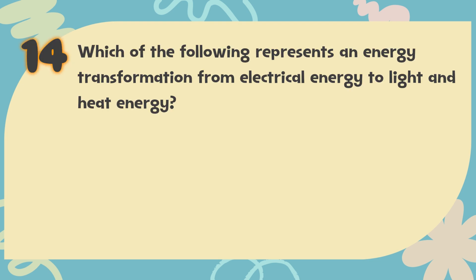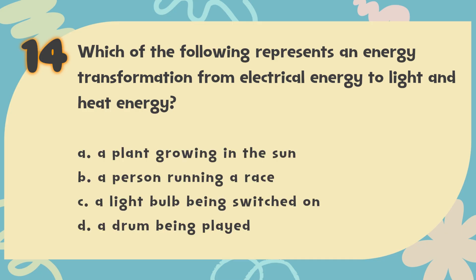Number 14: Which of the following represents an energy transformation from electrical energy to light and heat energy? The choices are: A. A plant growing in the sun, B. A person running a race, C. A light bulb being switched on, D. A drum being played.